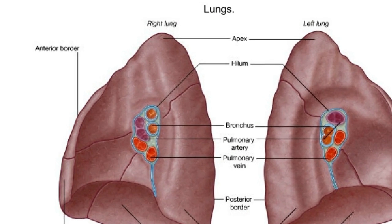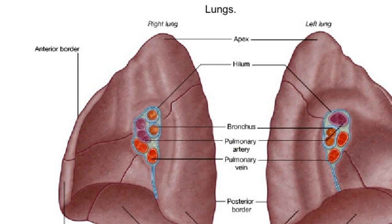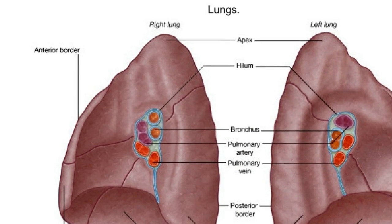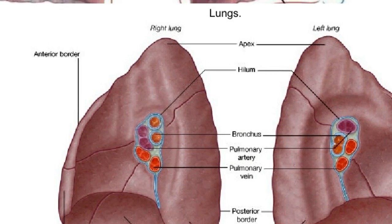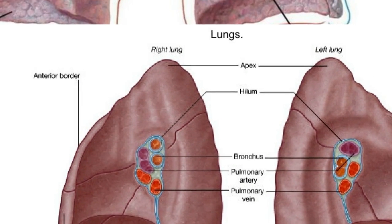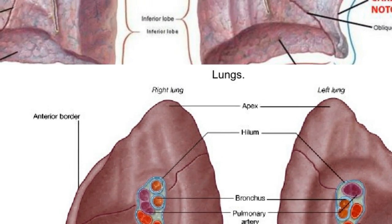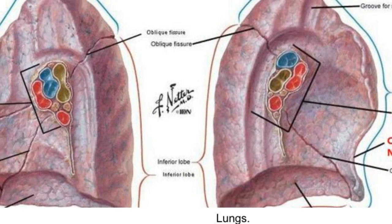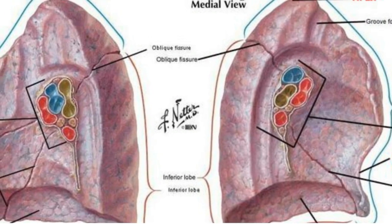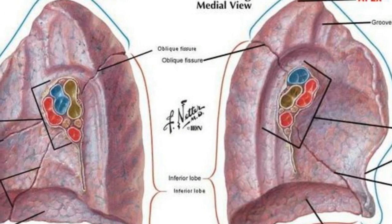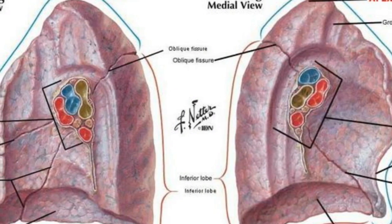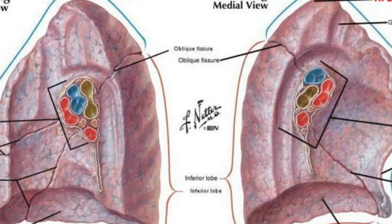When the trachea reaches a point in the mediastinum called the carina, it splits into two tubes called the primary bronchi. The right and left primary bronchi enter the corresponding lung and subdivide into more bronchial branches.